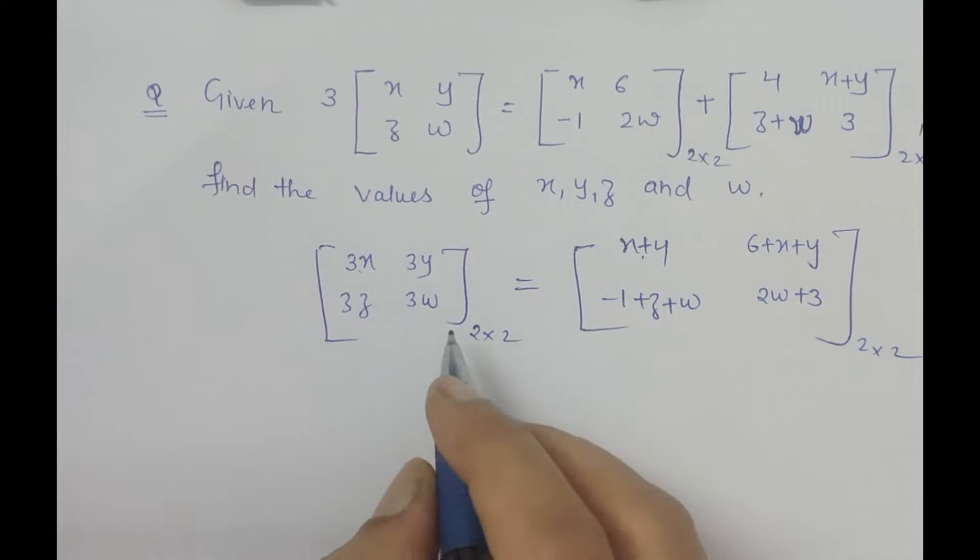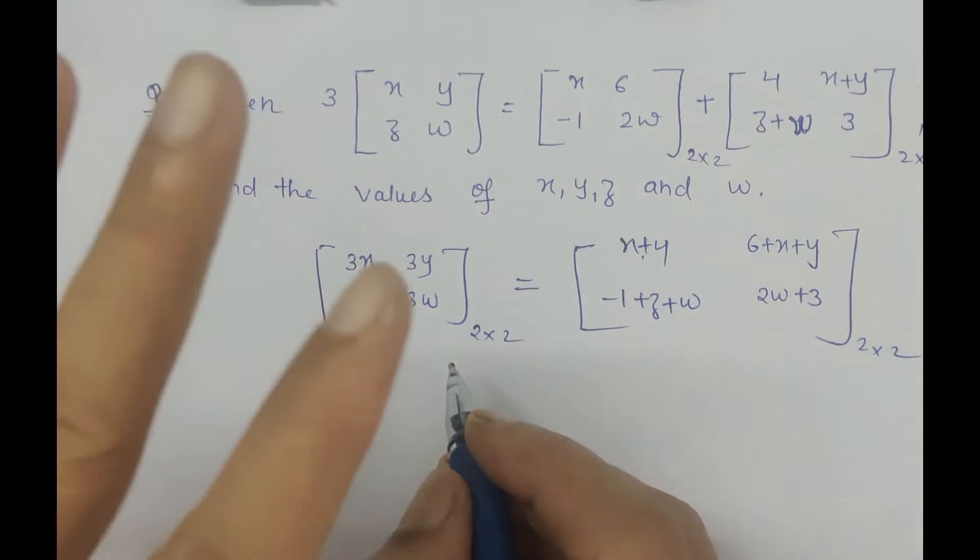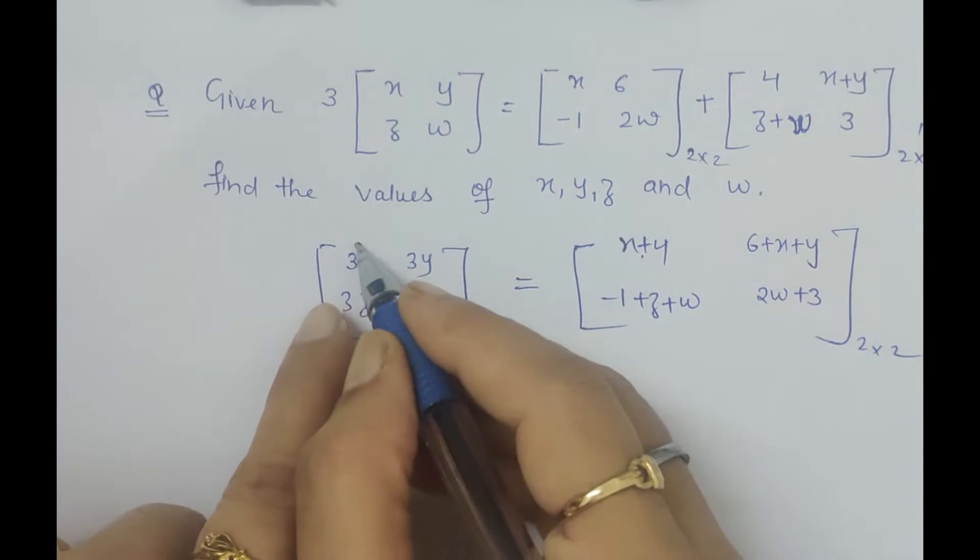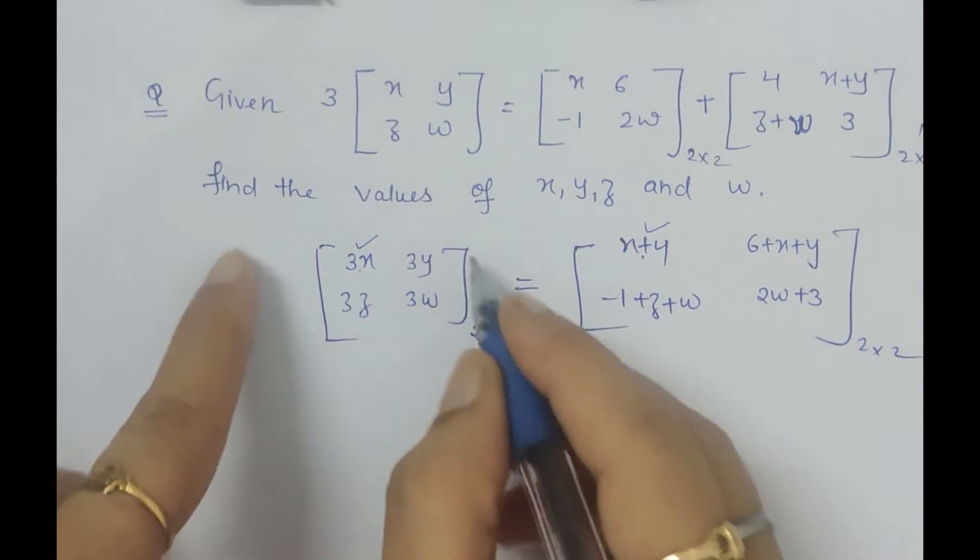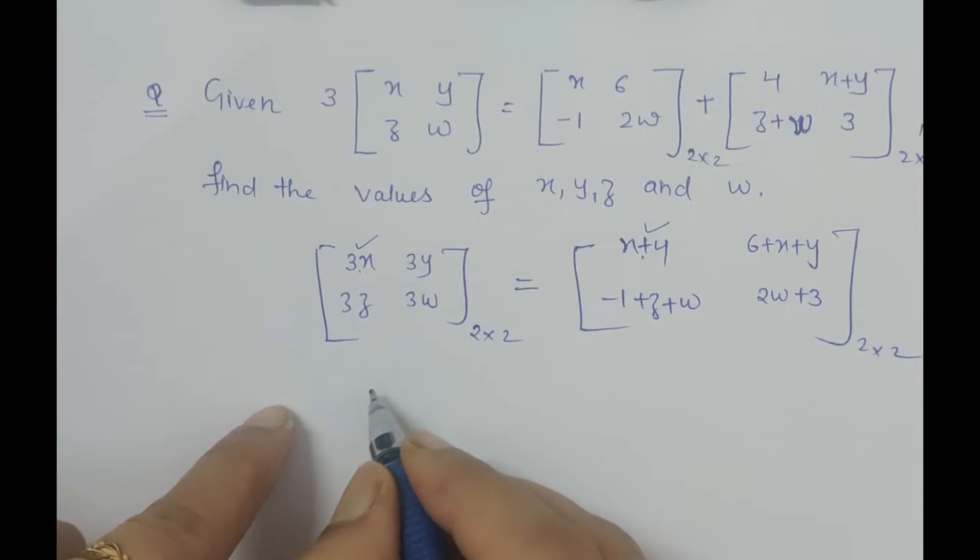We have four unknowns, let's see how we can calculate them. On comparing, we use the property of equal matrices: when two matrices are equal, their corresponding elements are equal and they are of the same order.